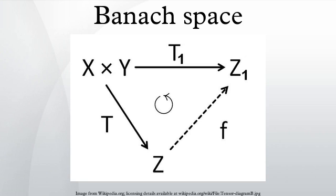In this sense, the product X × Y is complete if and only if the two factors are complete. If M is a closed linear subspace of a normed space X, there is a natural norm on the quotient space X/M. The quotient X/M is a Banach space when X is complete. The quotient map from X onto X/M, sending x to its class x + M, is linear, onto, and has norm 1, except when M equals X, in which case the quotient is the null space.